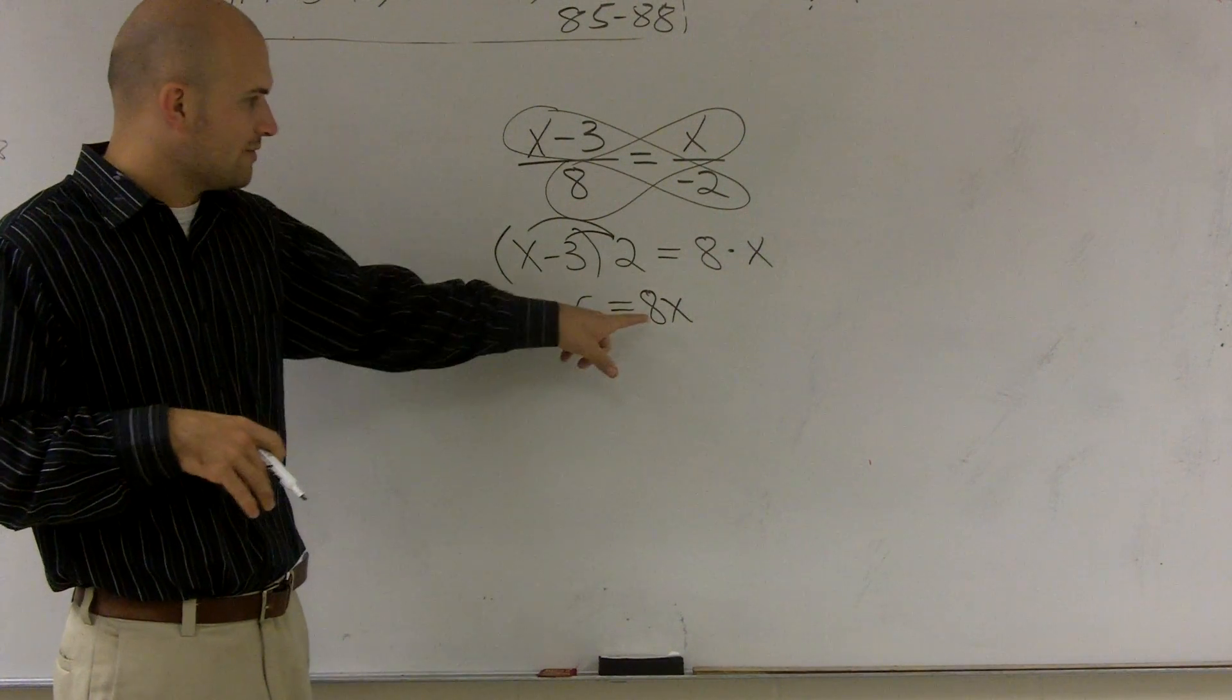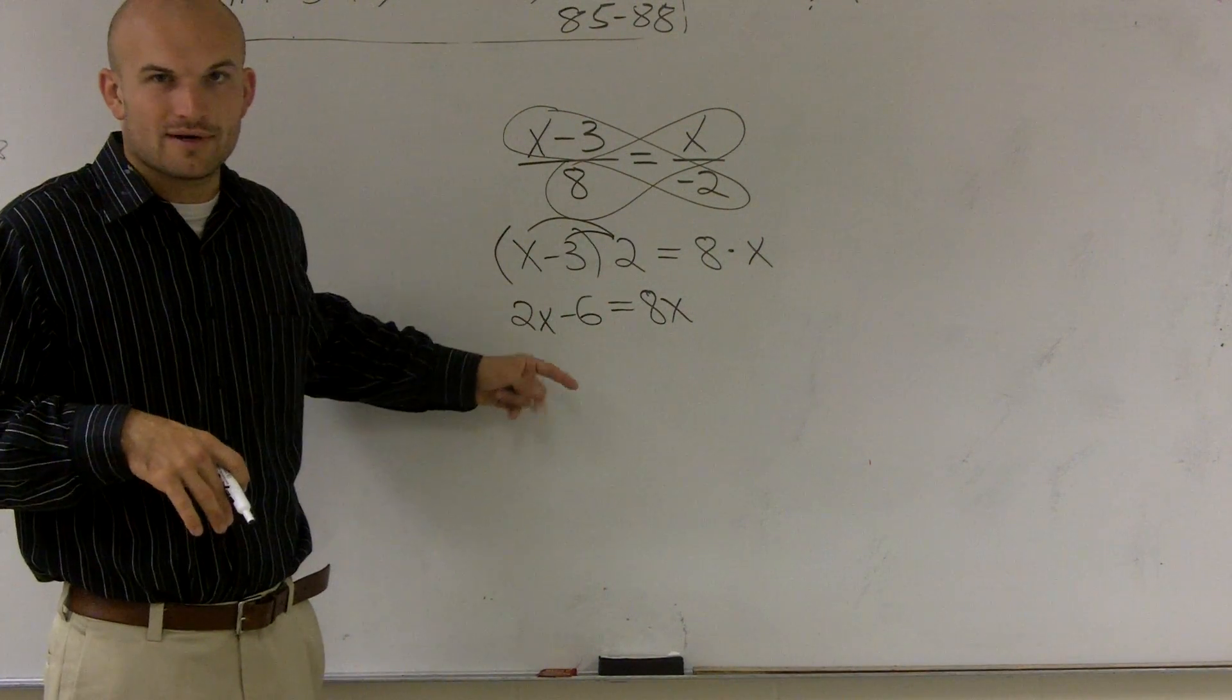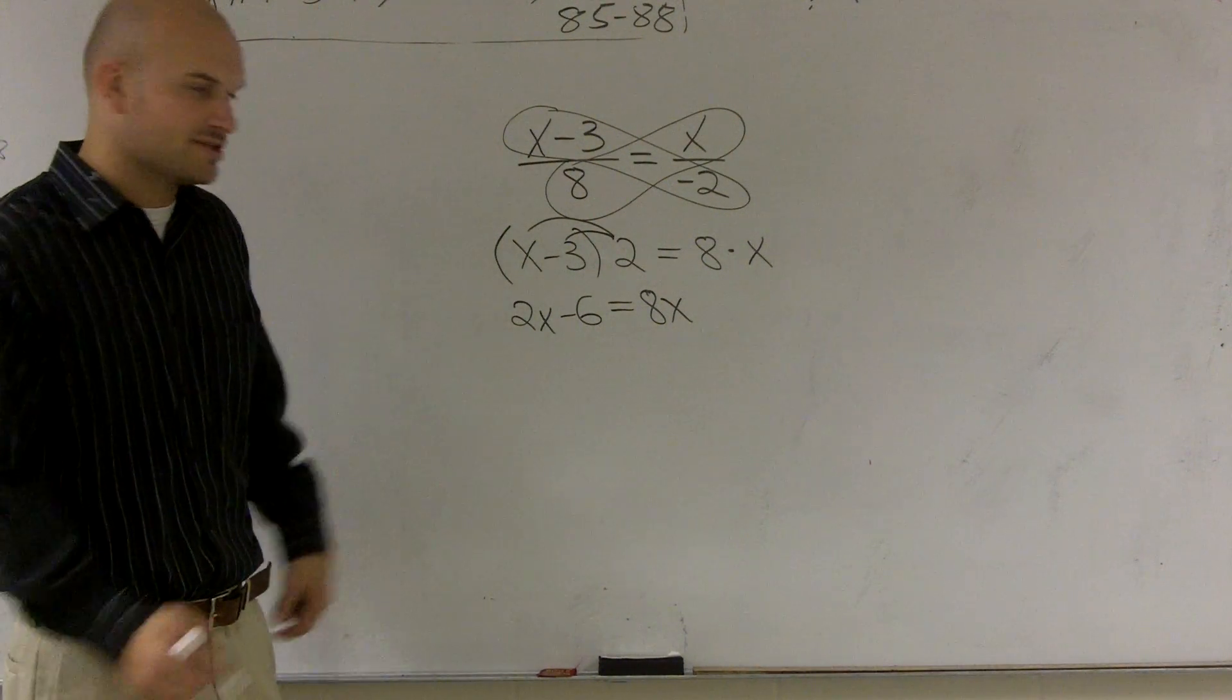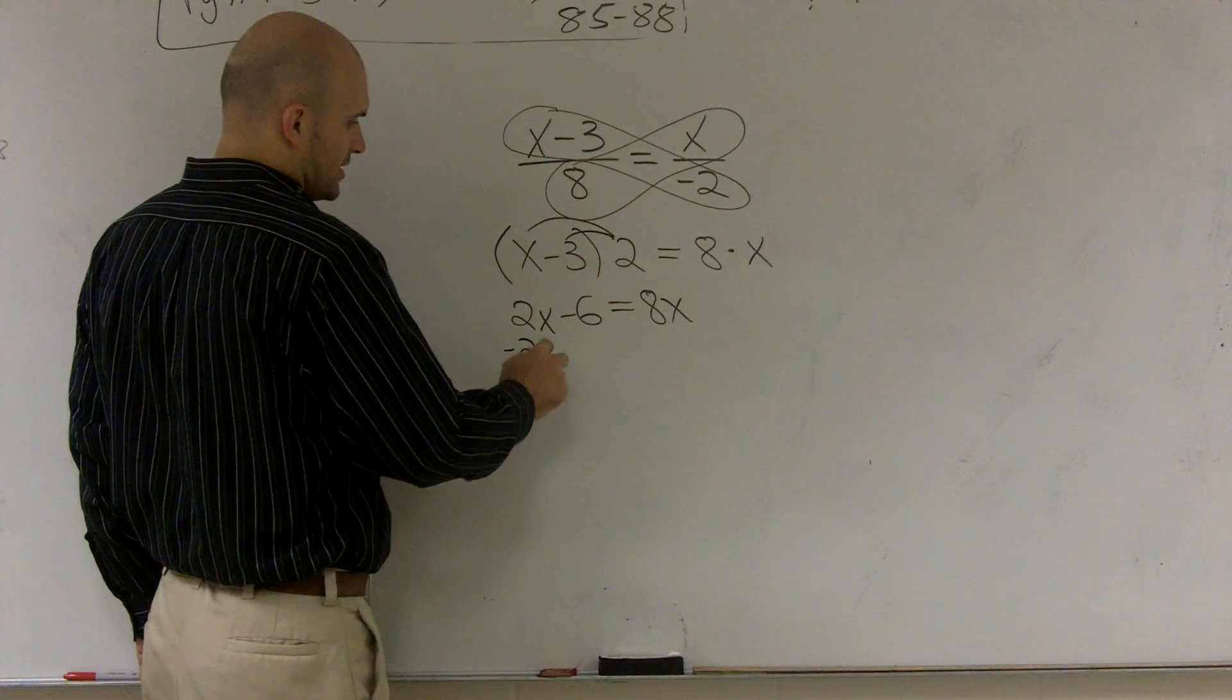However, sometimes it's easier to just get rid of the one that's not all by itself. Like here, you wouldn't want to get rid of the 8x because then you'd have 0 and you'd have an x and a number on the same side. So it's not really helpful. But this one, if I get rid of the 2x, this will work out pretty good.